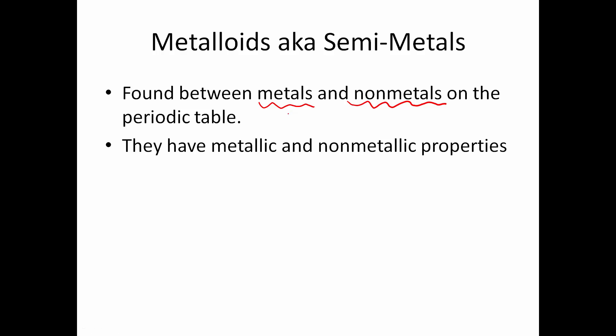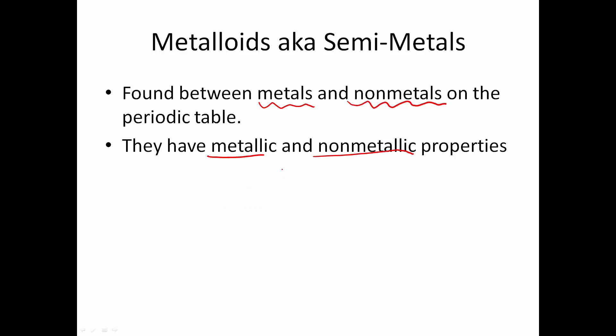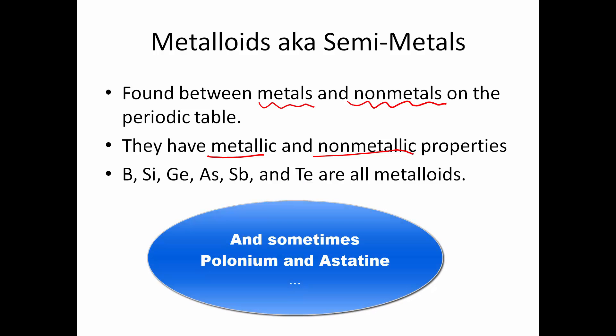They have both metallic and nonmetallic properties. These are our general metalloids: boron, silicon, germanium, arsenic, antimony, and tellurium.